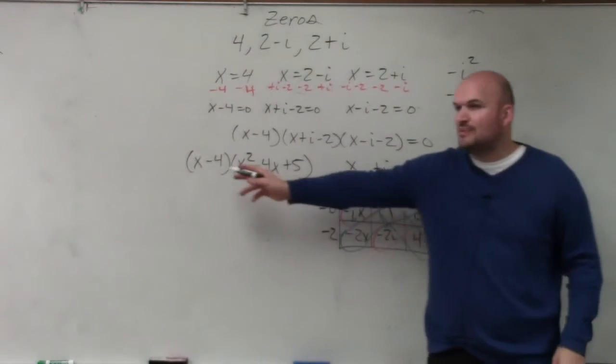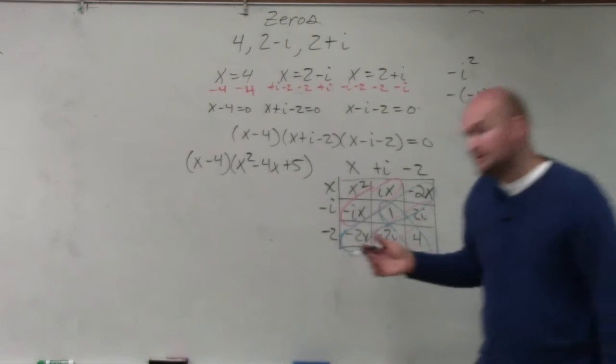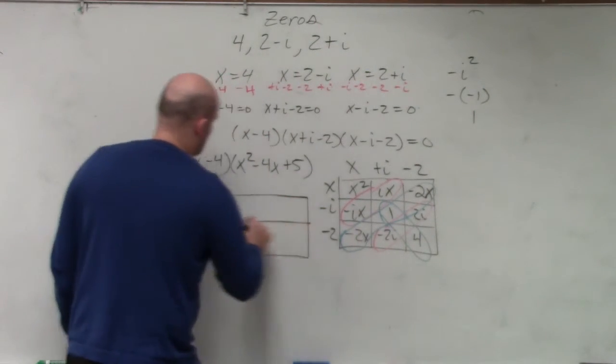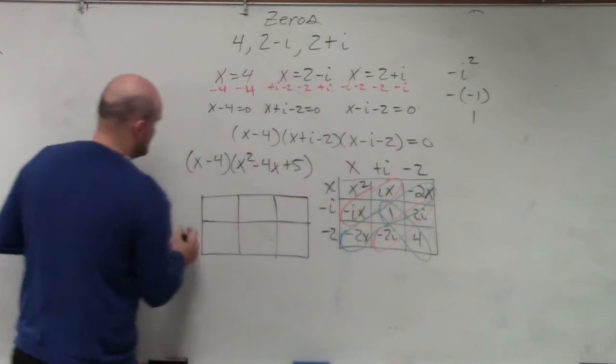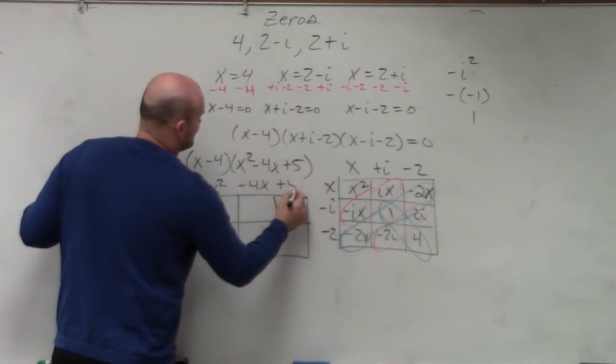Now, I need to multiply binomial times a trinomial. Can we use the same box method to do that? Yes, we can. So we have x minus 4, x squared minus 4x plus 5.